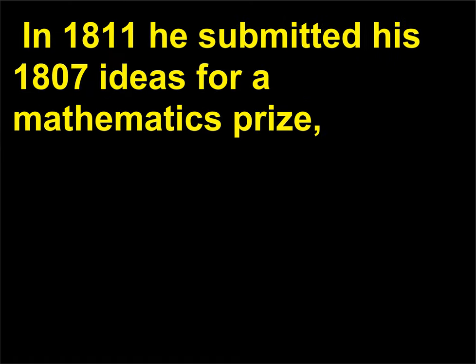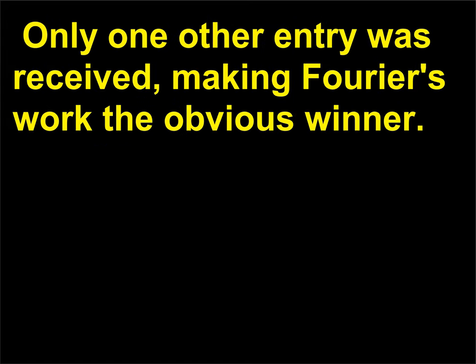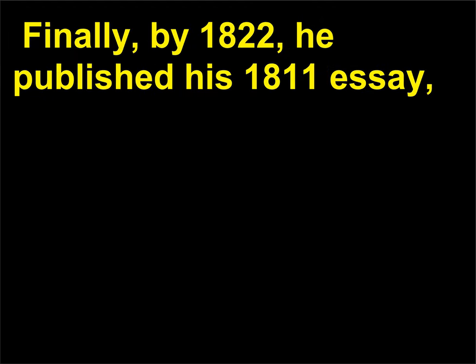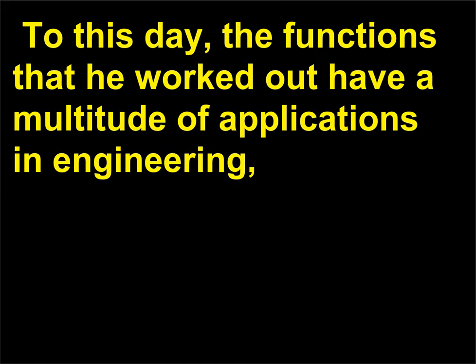In 1811 he submitted his 1807 ideas for a mathematics prize, along with additional work on the cooling of infinite solids and on terrestrial and radiant heat. Only one other entry was received, making Fourier's work the obvious winner. Finally, by 1822, he published his 1811 essay, making the techniques of Fourier analysis available to everyone. To this day, the functions that he worked out have a multitude of applications in engineering, science, and mathematics.